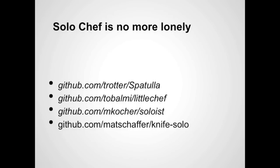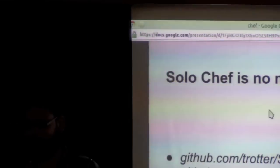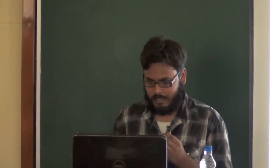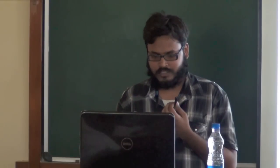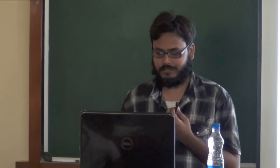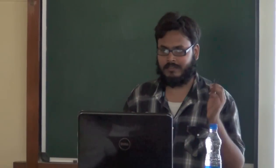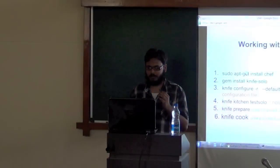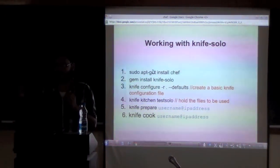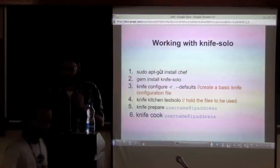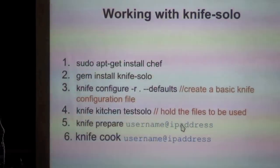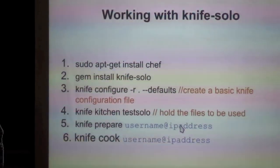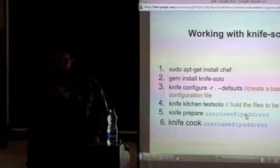Working with Chef can sometimes become tedious, so there are wrappers written on top of Chef Solo to make life easier. One such wrapper is Knife Solo. The first four steps are one-time setup: you install Chef, install Knife Solo, configure your defaults by generating your private and public keys and placing them in the respective files for authentication and authorization. When you have a new server, you simply run 'knife prepare username@IP-address' — this puts all files from your machine to the server. Then 'knife cook' installs all the packages.